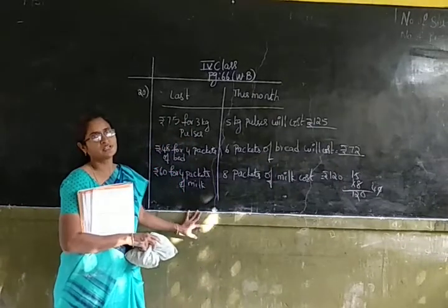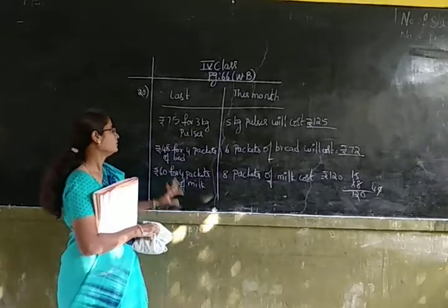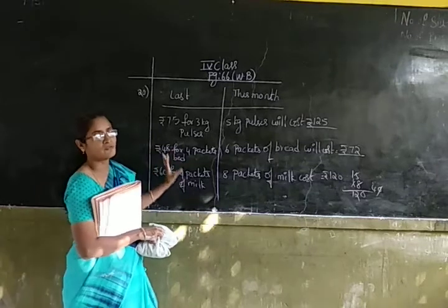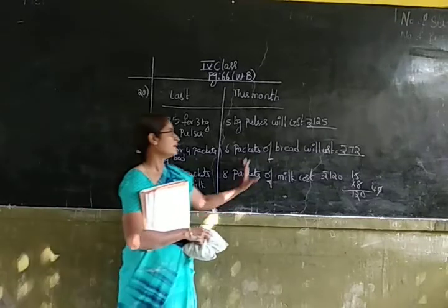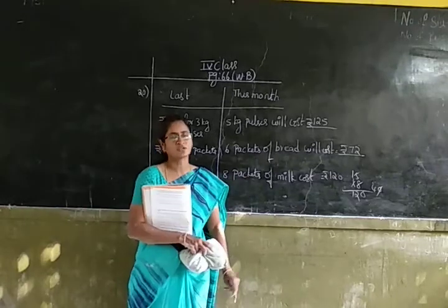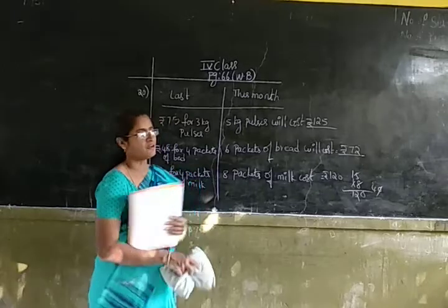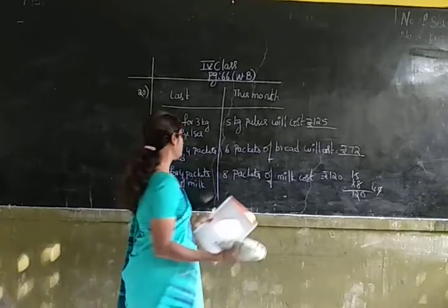This is also the unitary method. First we have to find out the cost of 1 item, and then we have to find out the cost of the required number of items.